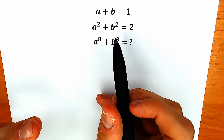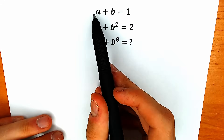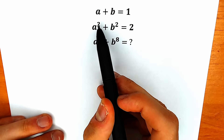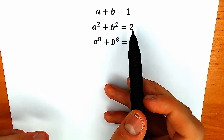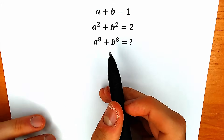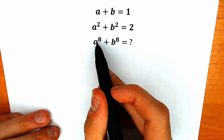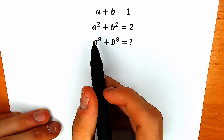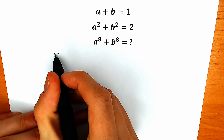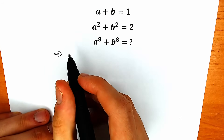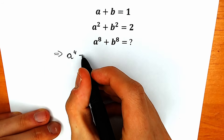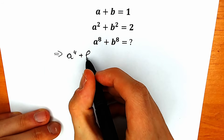First of all, here is the main idea. We know the first power equals 1, the second power — a squared plus b squared — equals 2. The main idea is to get closer and closer to a to the power 8. Let's start with a to the fourth power.